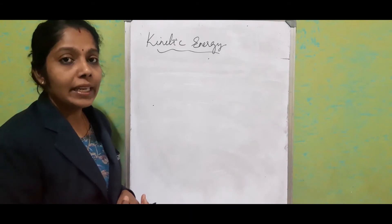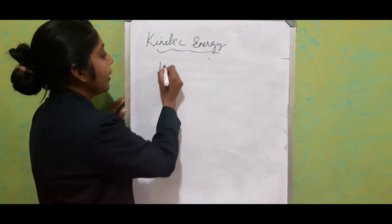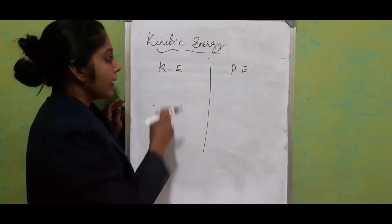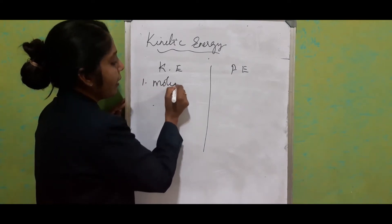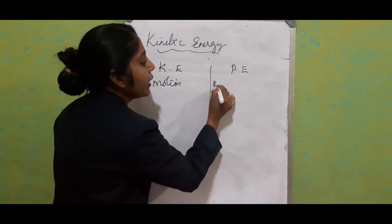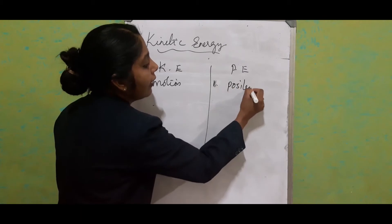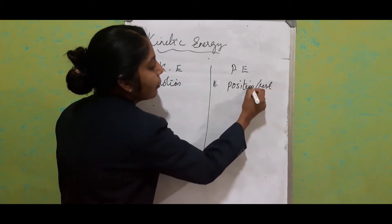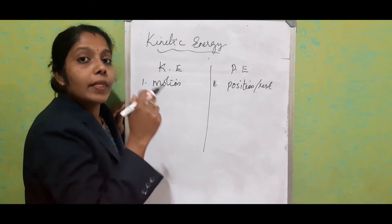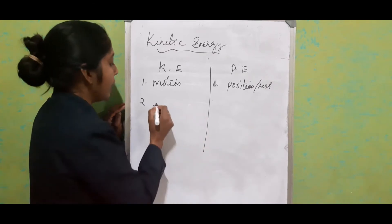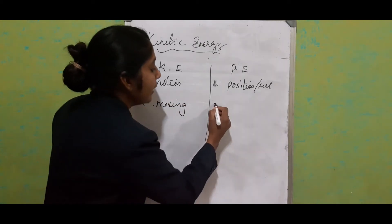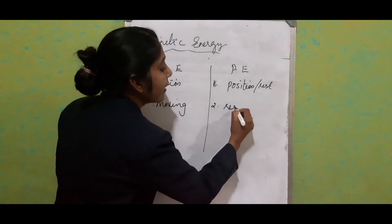Now we will see the differences between kinetic energy and potential energy. The first difference: kinetic energy is possessed by a body due to its motion, whereas potential energy is due to its position or rest. The second difference: in kinetic energy, work is done on a moving object, while for potential energy, work is done to bring the object to a rest position.